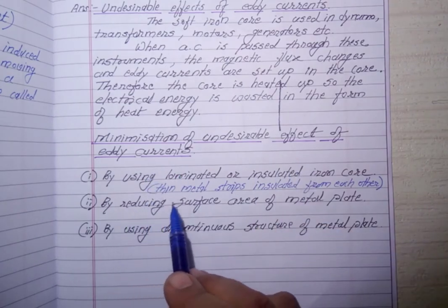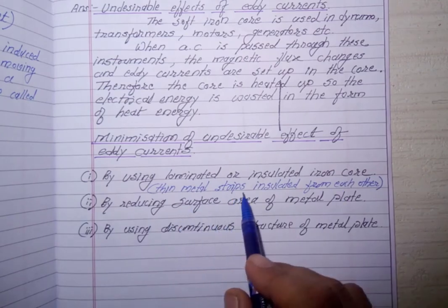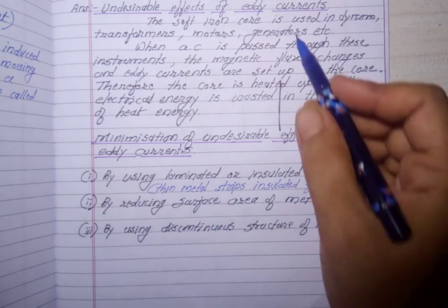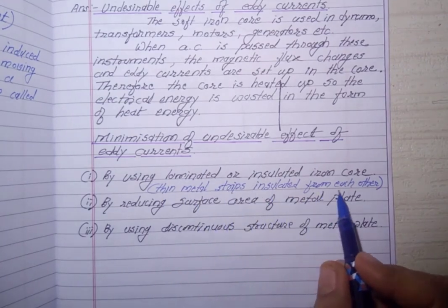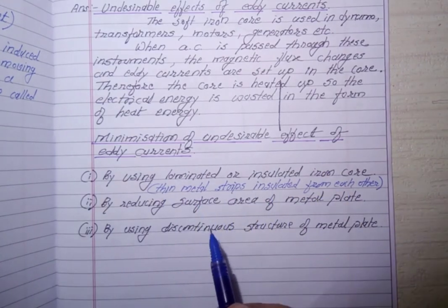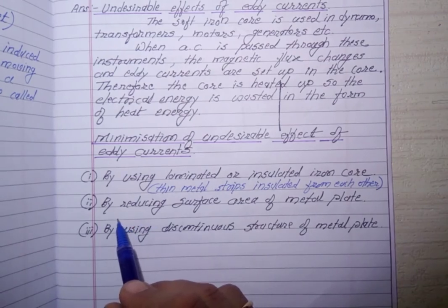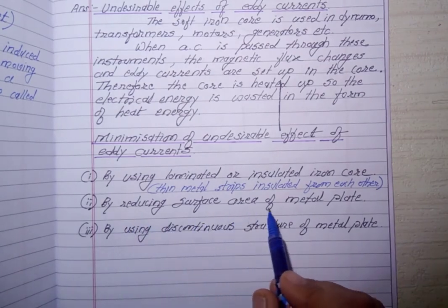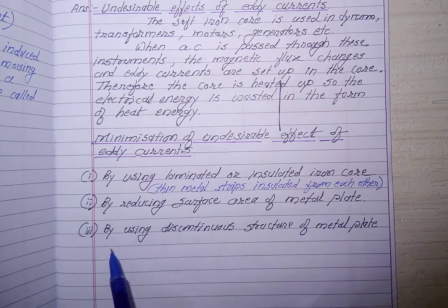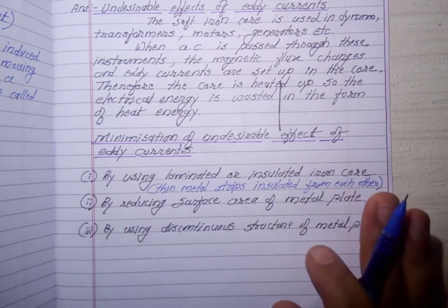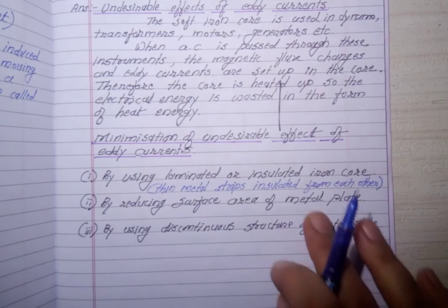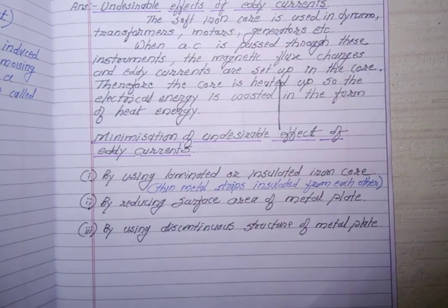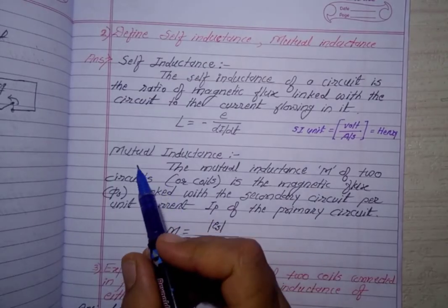To minimize the undesirable effect of eddy currents: first, by using laminated or insulated iron core - thin metal strips insulated from each other; second, by reducing the surface area of the metal plate; third, by using a discontinuous surface of the metal plate. Using this discontinuous structure, we can reduce the undesirable effect of eddy currents.